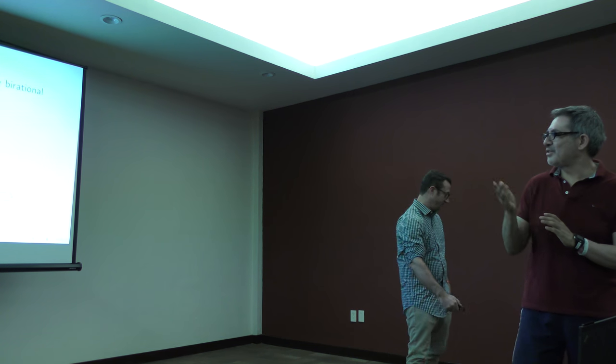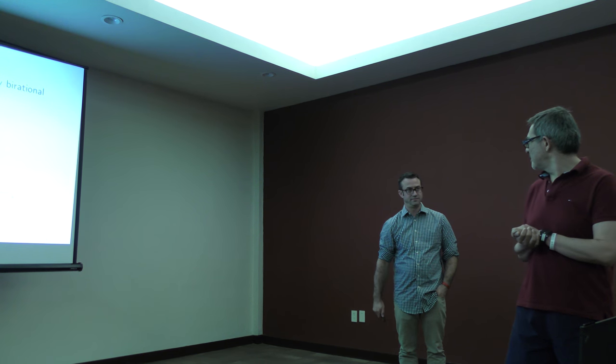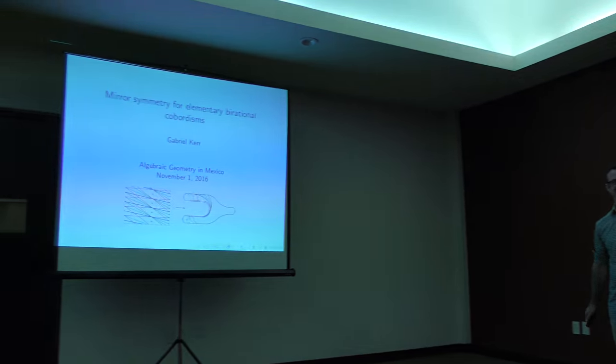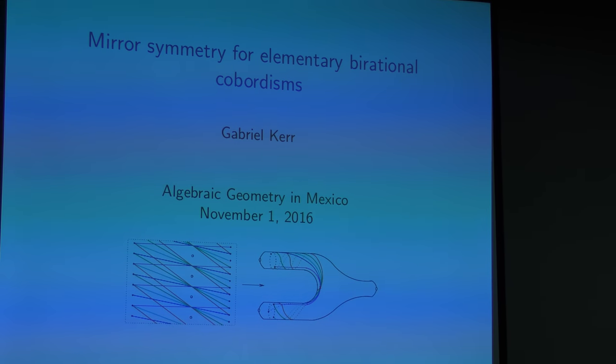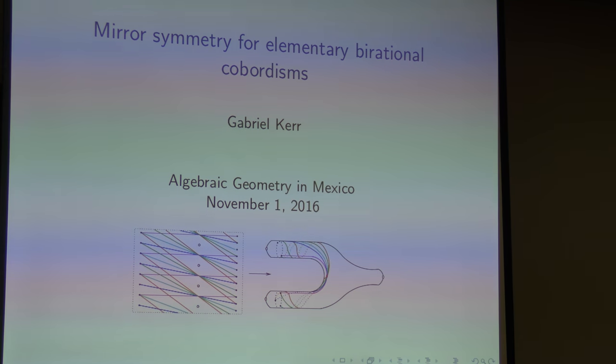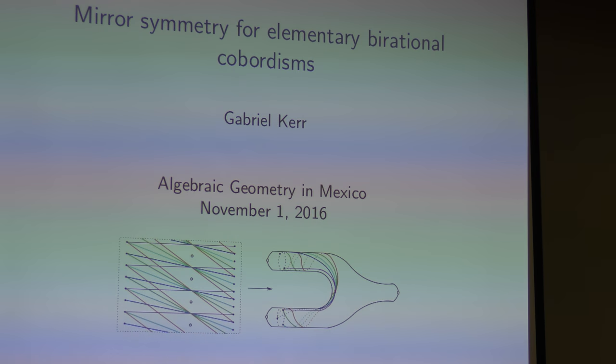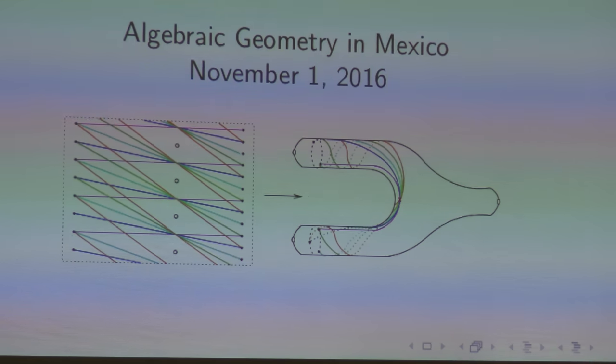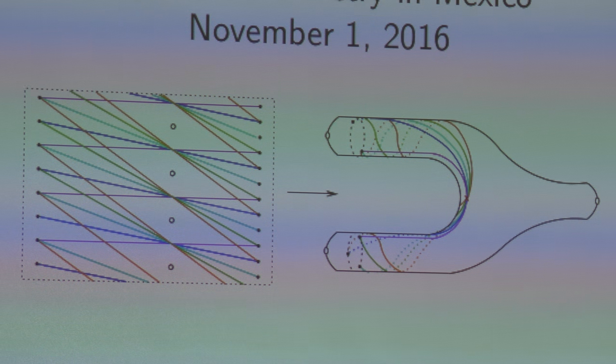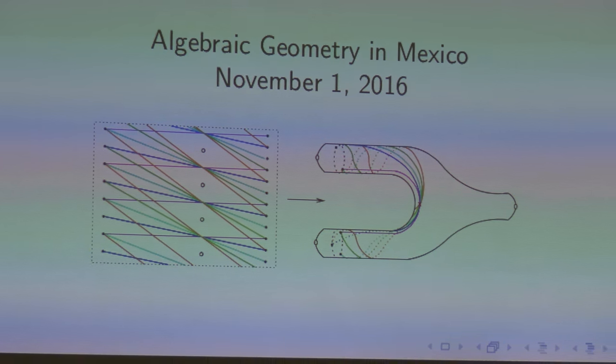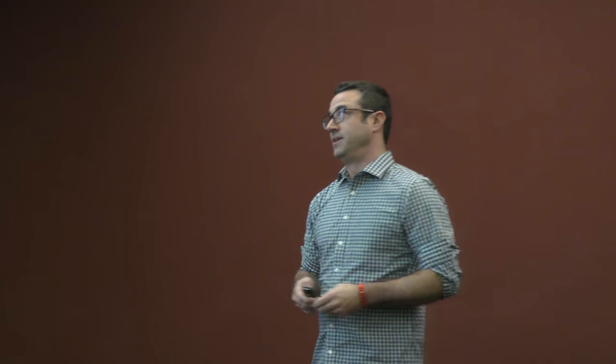For the morning session today — it's a bit after the morning — it's a pleasure to have a real care from Kansas State talking about Homological Mirror Symmetry for Elementary Birational Cobordisms. Thanks very much to the organizers for inviting me. It's a pleasure to be here. Today I want to talk about Homological Neurosemetry for Elementary Birational Cobordisms, and I'll try to explain some of the words in that title.